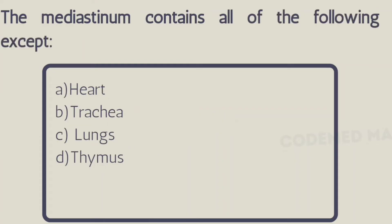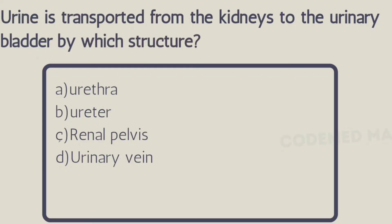Next question: the mediastinum contains all of the following except — Option A: heart, Option B: trachea, Option C: lungs, Option D: thymus. The right answer is Option C, lungs.